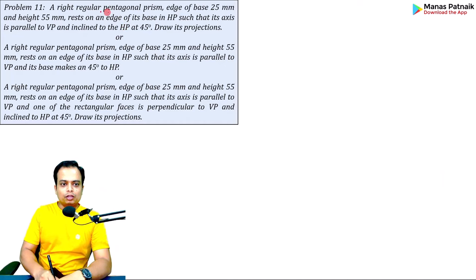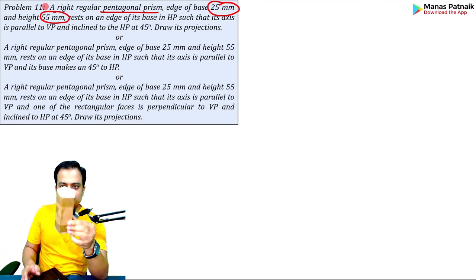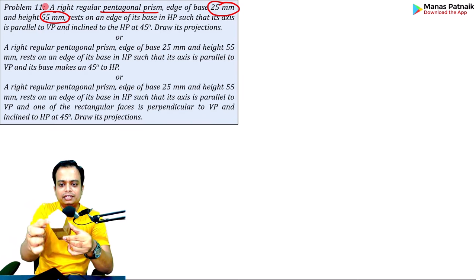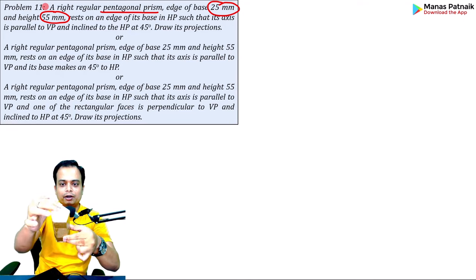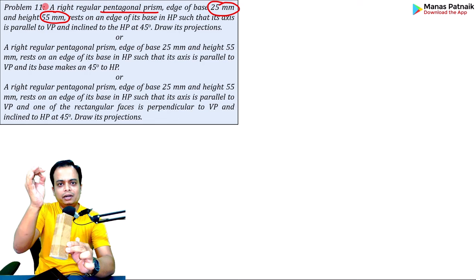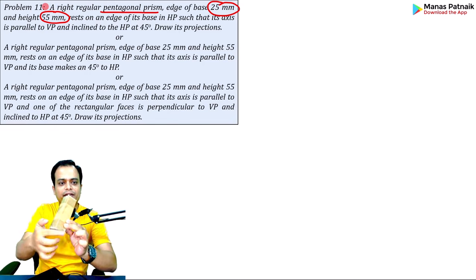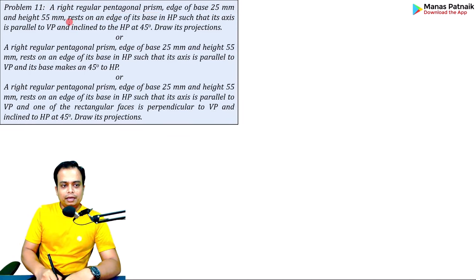We are talking about a pentagonal prism where the base edges are 25mm and the height is 55mm. This is a pentagonal prism — the height has been given as 55, these are the edges at the top, and these are the edges at the bottom or the base. It is a regular pentagon — absolutely identical, all of them are 25 millimeters each.